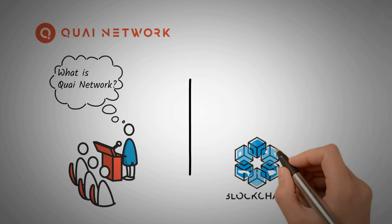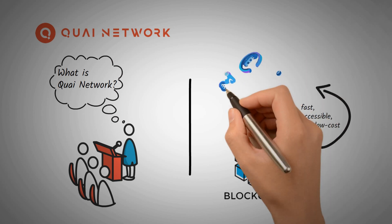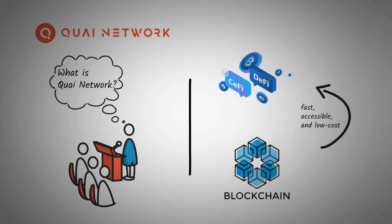Quai is a scalable, EVM-compatible network of merged-mined blockchains enabling fast, accessible, and low-cost decentralized finance.